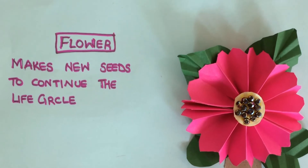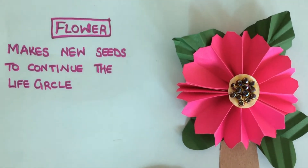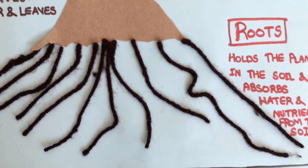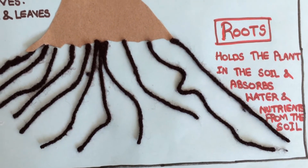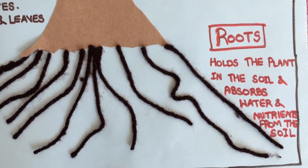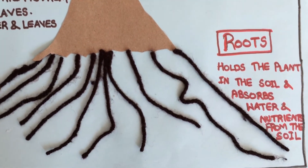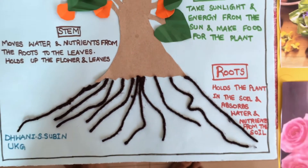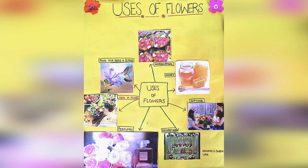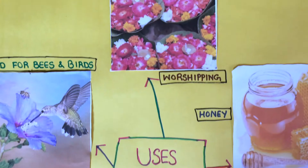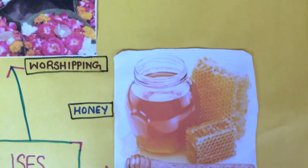The stem moves water and nutrients from the roots to the leaves and holds up the flower and leaves. Flower — makes new seeds to continue the life cycle. Roots.